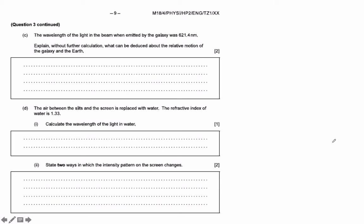All right, the wavelength of light in the beam emitted by the galaxy was 621 nanometers. So it was shorter, the wavelength was shorter, or the frequency was higher.